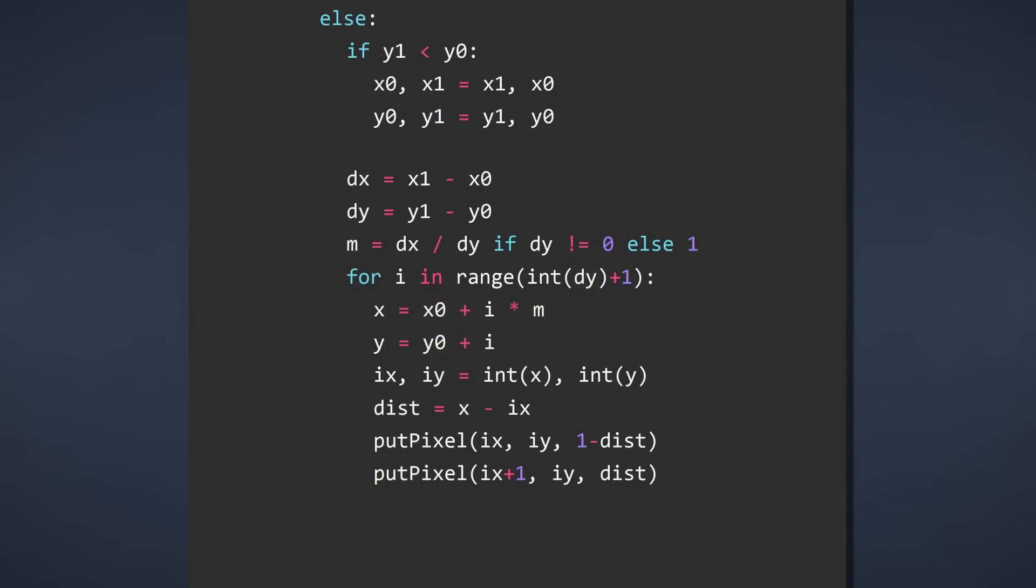Finally, we use the horizontal distance and place pixels to the left and right of the plotted points. Makes sense, right? We just adjust everything to work vertically. Now we're almost done.